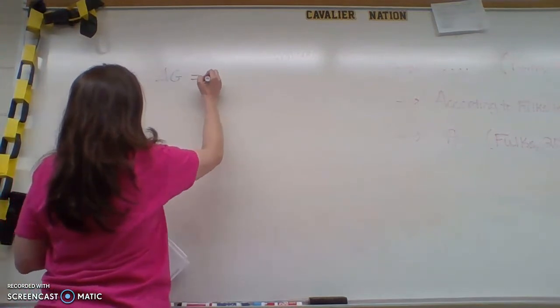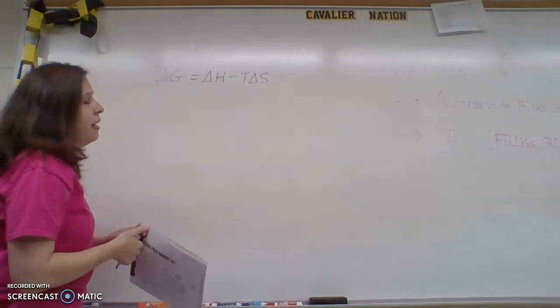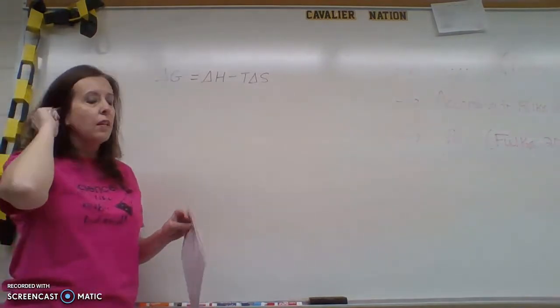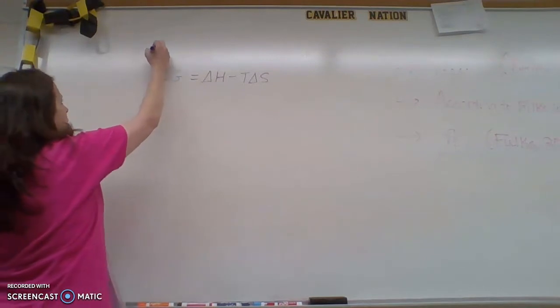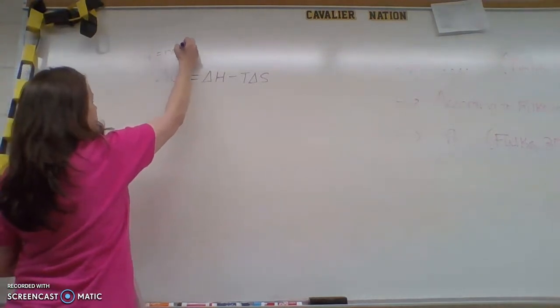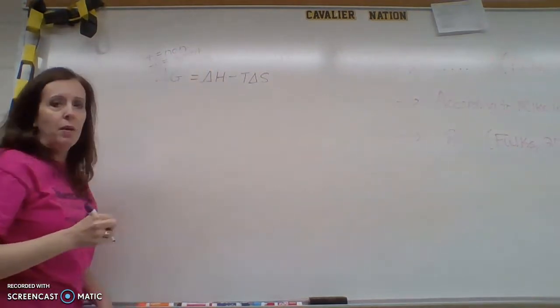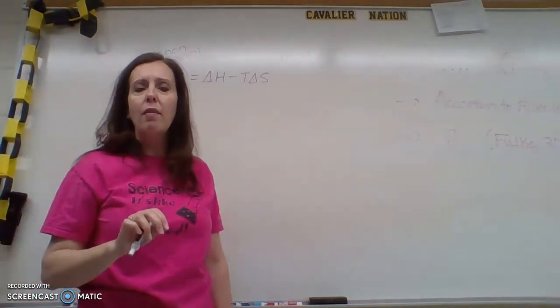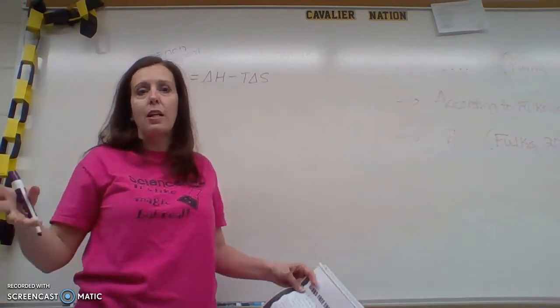Delta G equals delta H minus T delta S, all right? So if delta G is positive, you are going to have a non-spontaneous reaction. If the value you get is negative, it means it's spontaneous. That means I don't have to do anything to that reaction to get it going if it's spontaneous. It just reacts on its own.